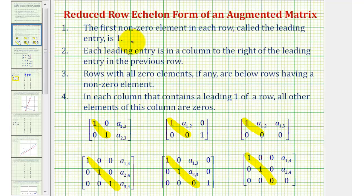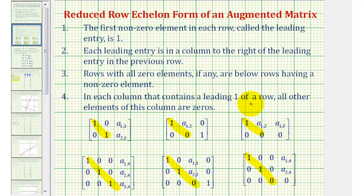Number one: the first non-zero element in each row, called the leading entry, is 1. Number two: each leading entry or 1 is in a column to the right of the leading entry in the previous row. Number three: rows with all zero elements, if any, are below rows having a non-zero element. And number four: in each column that contains a leading 1 of a row, all other elements in that column are zeros.